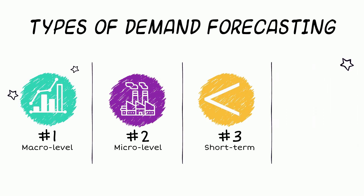Number three is short term, which is usually done for a time period of less than 12 months. It looks at demand for under a year of sales to inform the day-to-day. An example of this is planning production needs for Black Friday and Cyber Monday promotions.